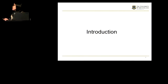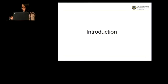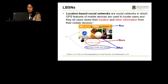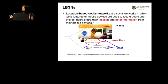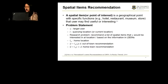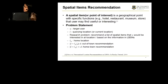First, I will give a brief introduction to related concepts, challenges, and related works. The location-based social networks are social networks in which the GPS features of mobile devices are used to locate the users and allow users to share their location and other kinds of information. Here, spatial items refers to a geographical point in location-based social networks with specific functions such as a hotel, restaurant, museum, and so on.